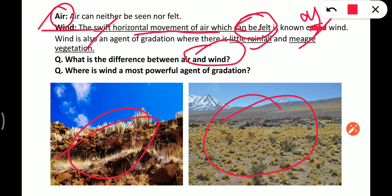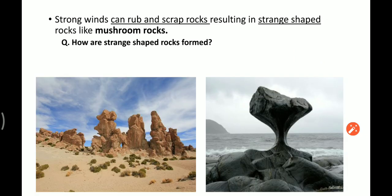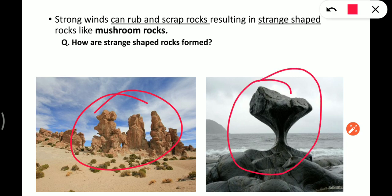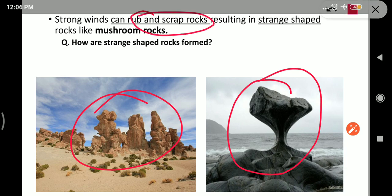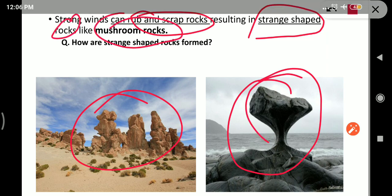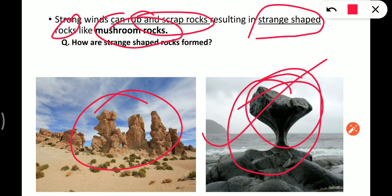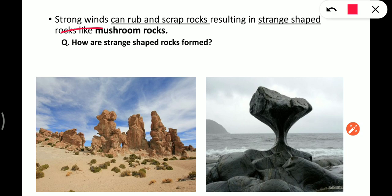Wind is most powerful as an agent of gradation where there is little rainfall and meager vegetation. Wind can rub and scrape rocks, resulting in strange-shaped rocks like mushroom-shaped rocks. How are strange-shaped rocks formed? Strong winds rub and scrape rocks and form strange-shaped rocks like mushroom rocks.